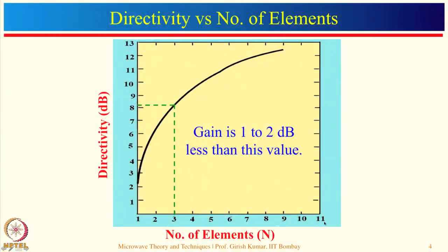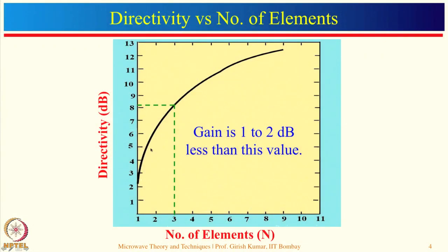As the number of elements increases from 1 to 11, directivity increases. For a single element, directivity is approximately 2 dB. With two elements (one dipole and one reflector), directivity is about 5 dB. With three elements, it can be approximately 8 dB, though gain is 1 to 2 dB less than directivity. Depending on requirements, you can choose a larger number of elements.